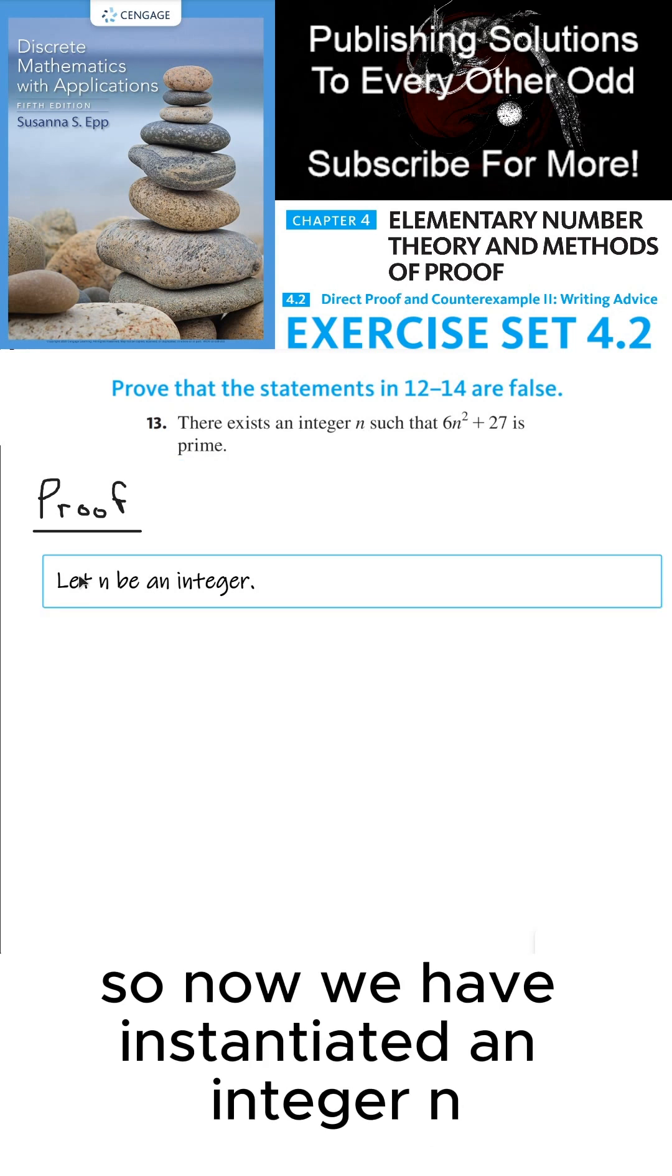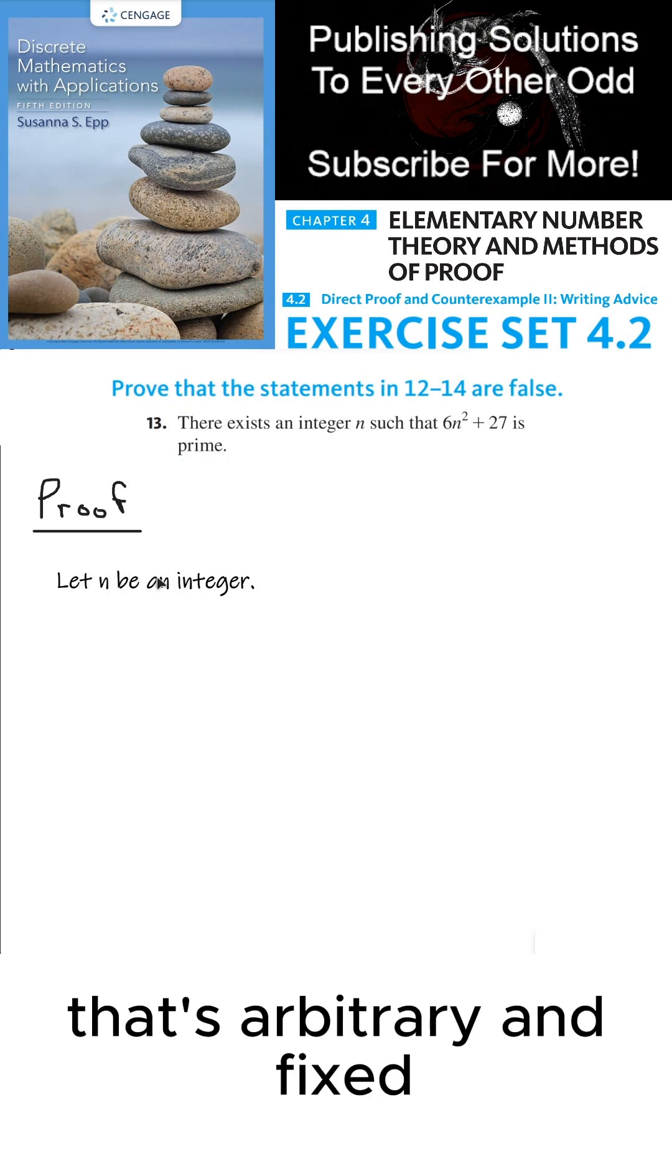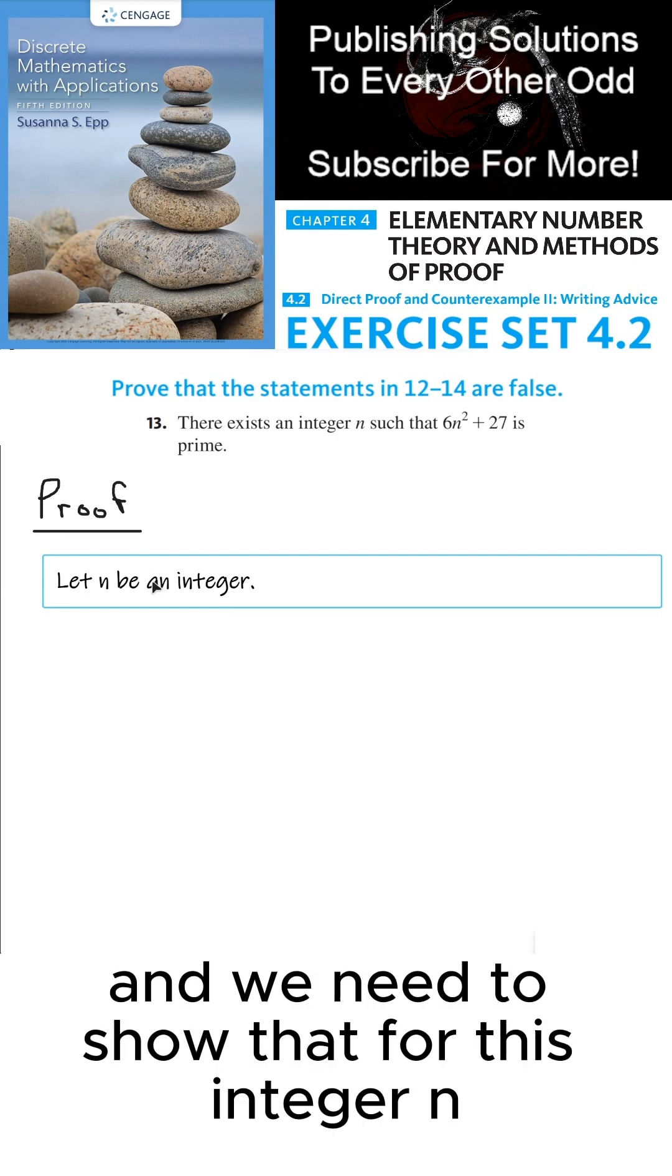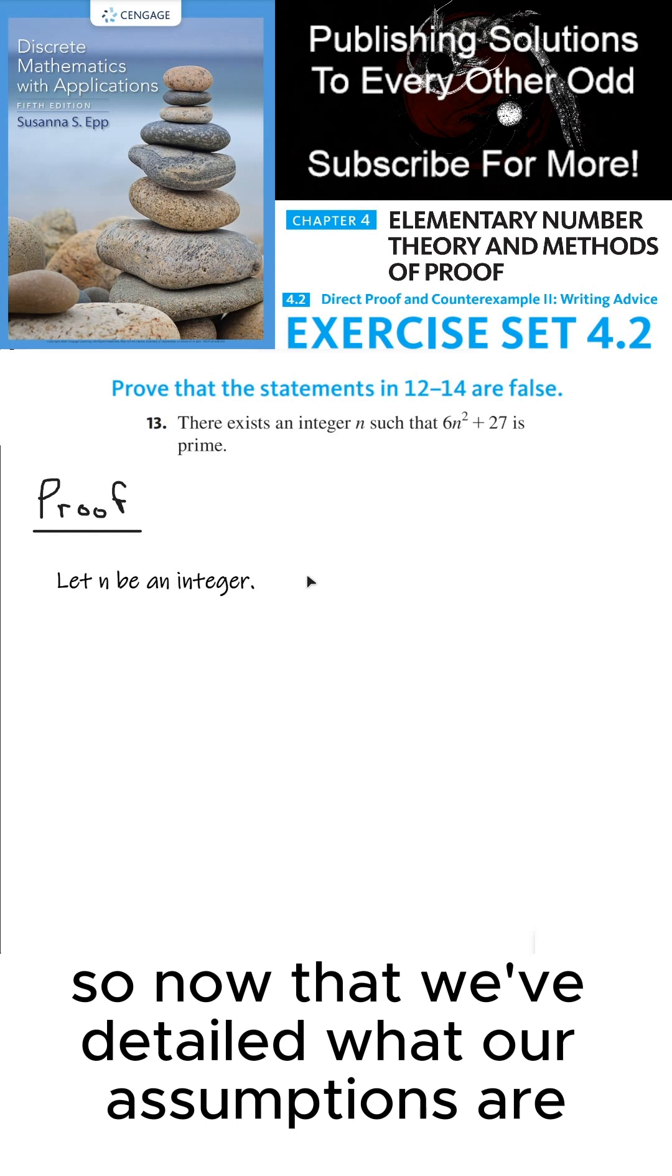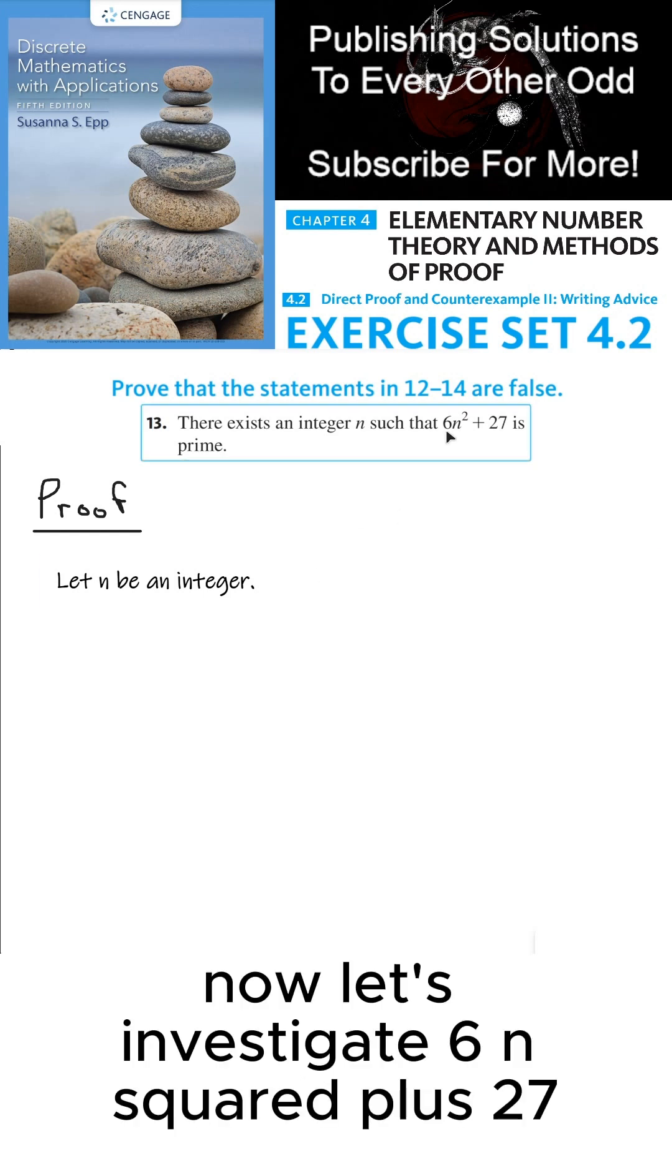So now we have instantiated an integer n that's arbitrary and fixed, and we need to show that for this integer n that 6n squared plus 27 is not prime. So now that we've detailed what our assumptions are, now let's investigate 6n squared plus 27.